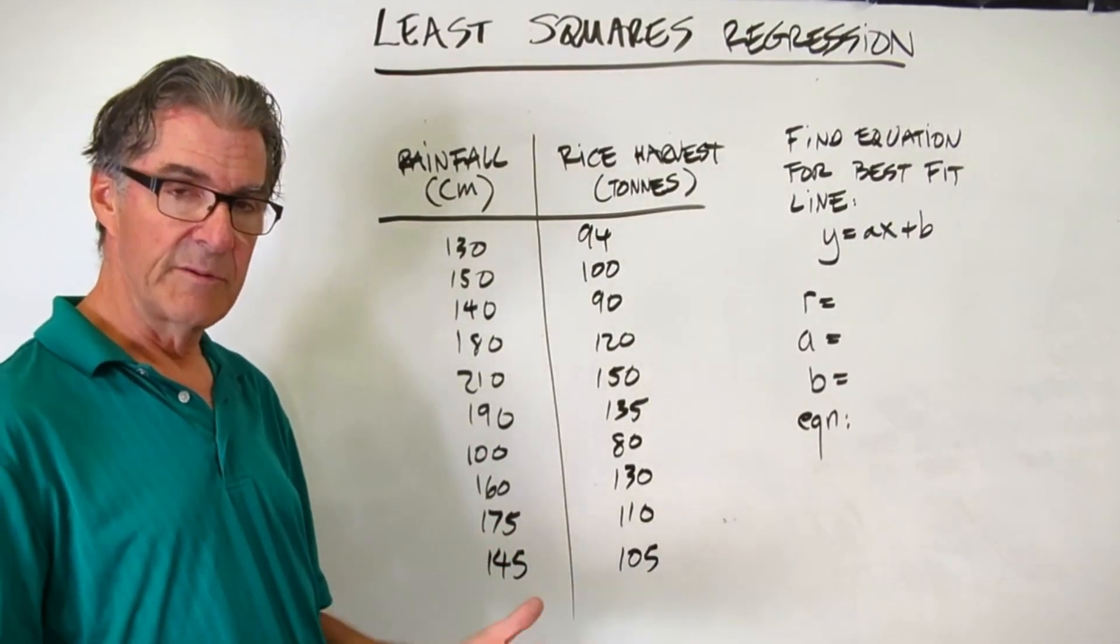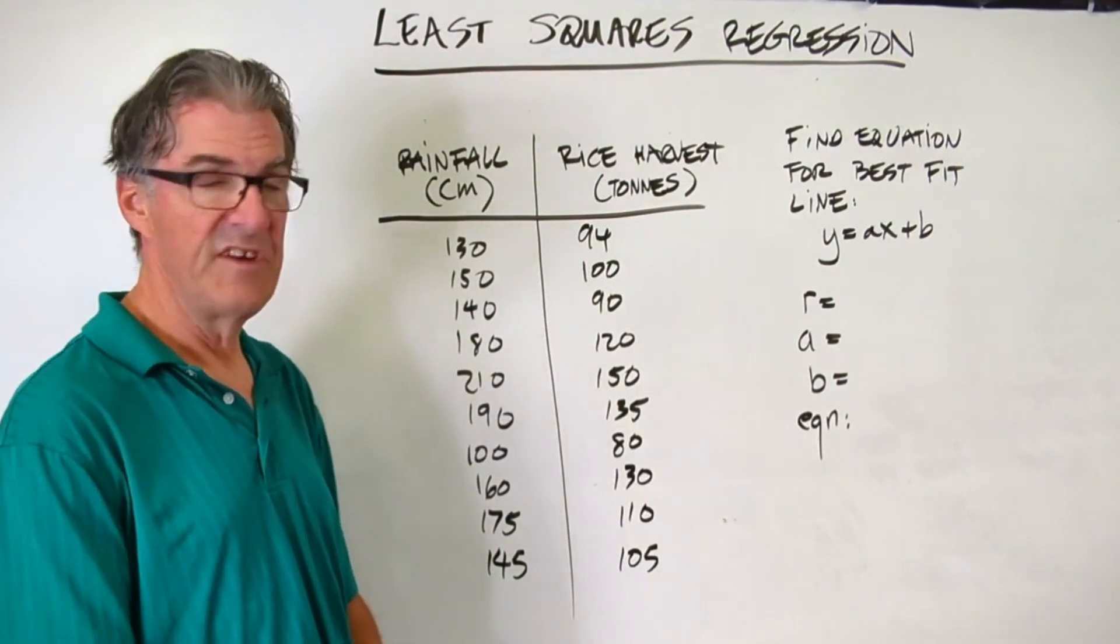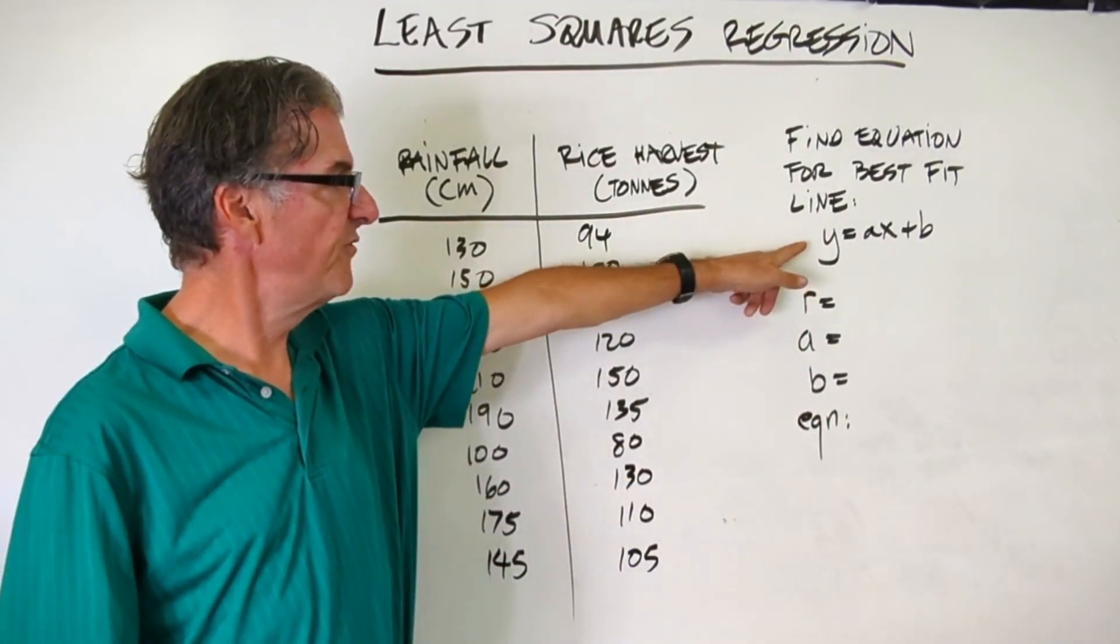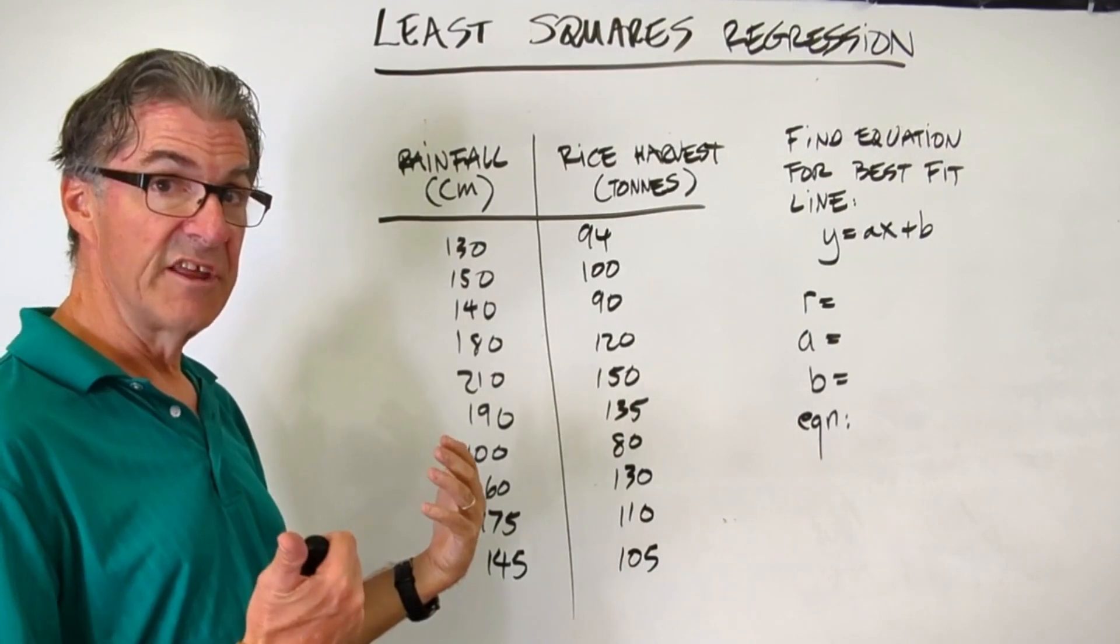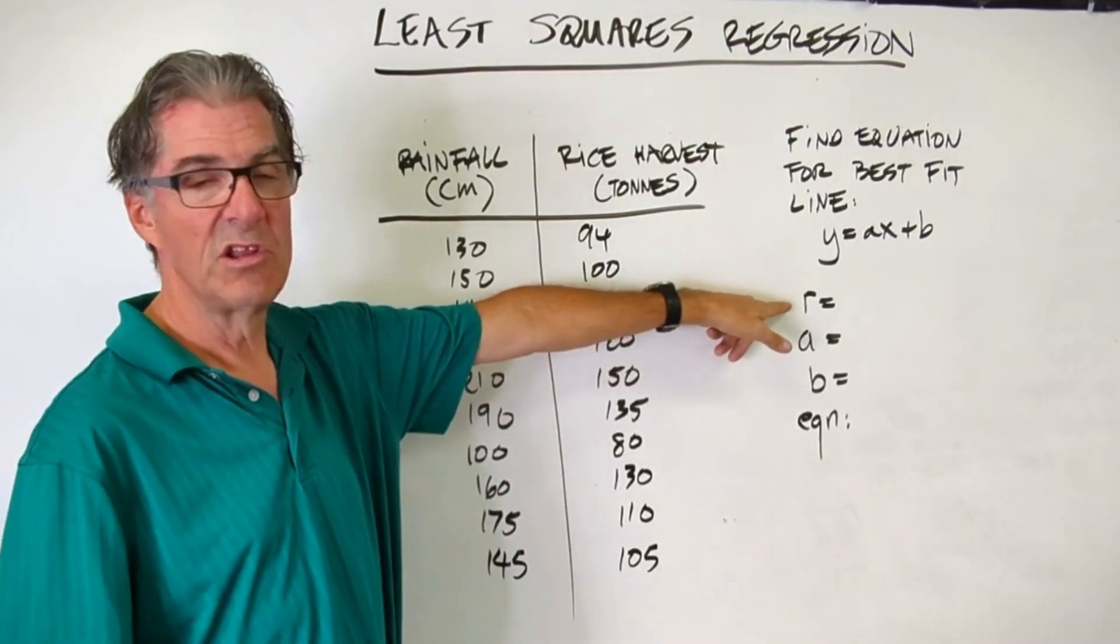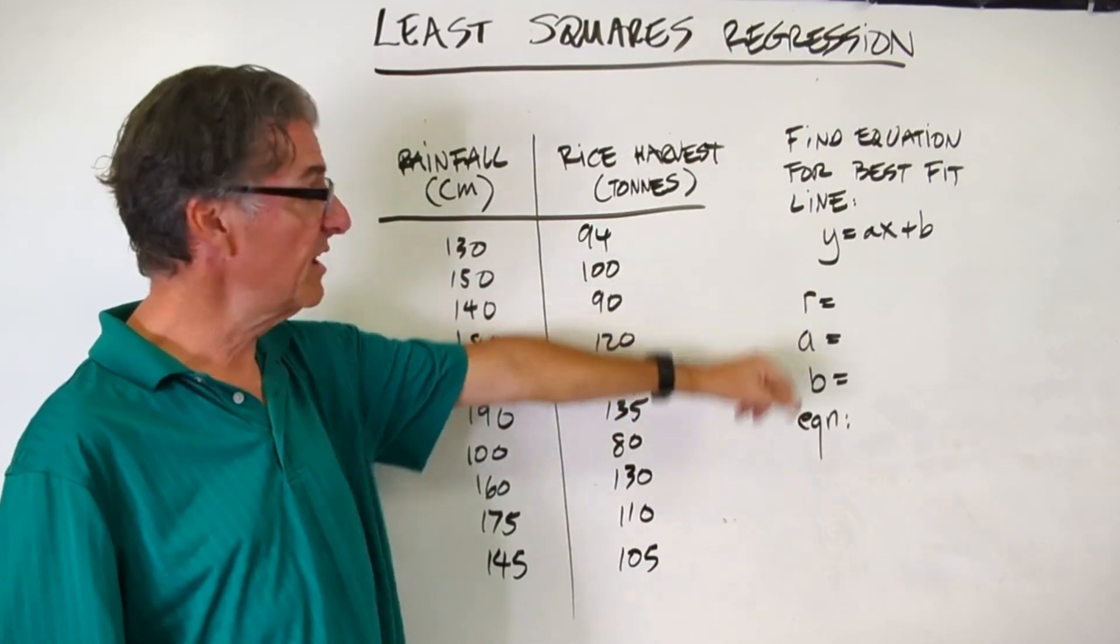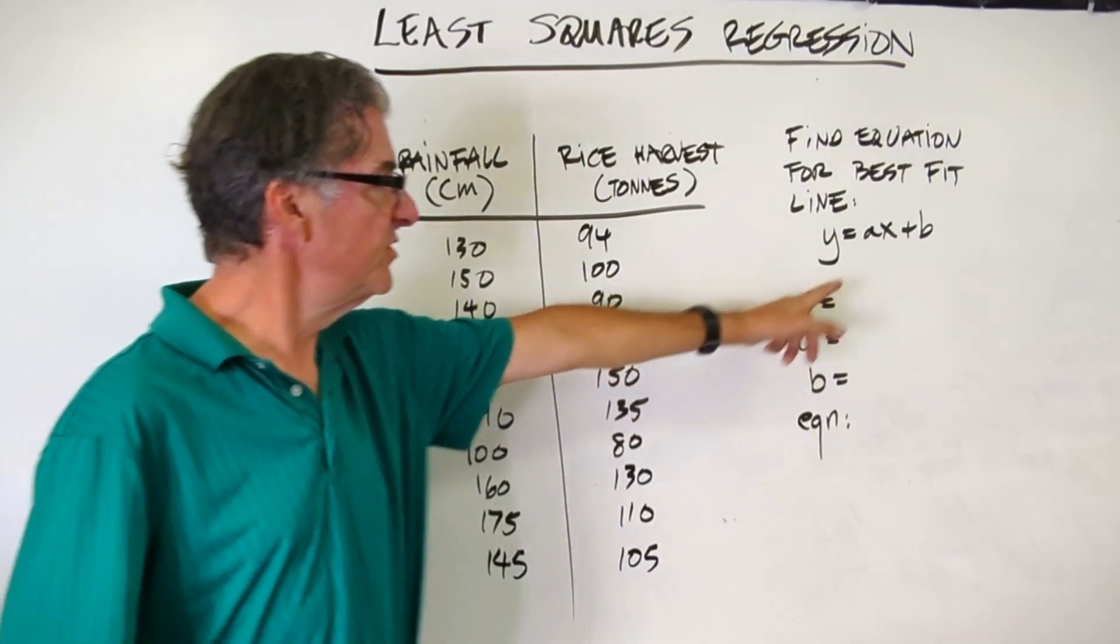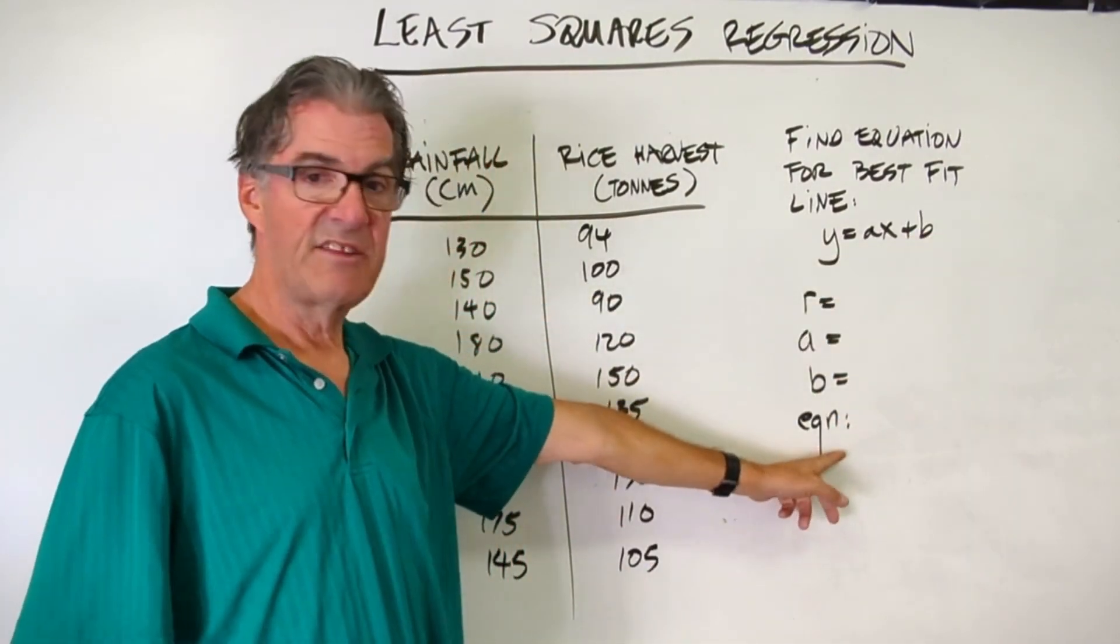And so what we're going to do now is I'm going to turn you loose on your graphing display calculator to find an equation for the best fit line. And we're looking for this format, this is gradient intercept form. So you're going to use your calculator, and I want you to find the r value along the way. We need to confirm that that's big enough that we have a strong correlation. And then your a, which is your gradient, and then your b, which is your y-intercept, and then go ahead and write that equation out.